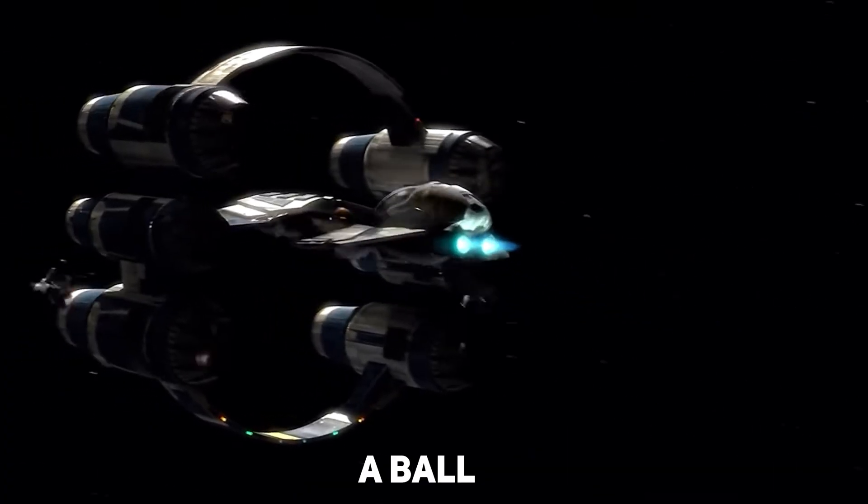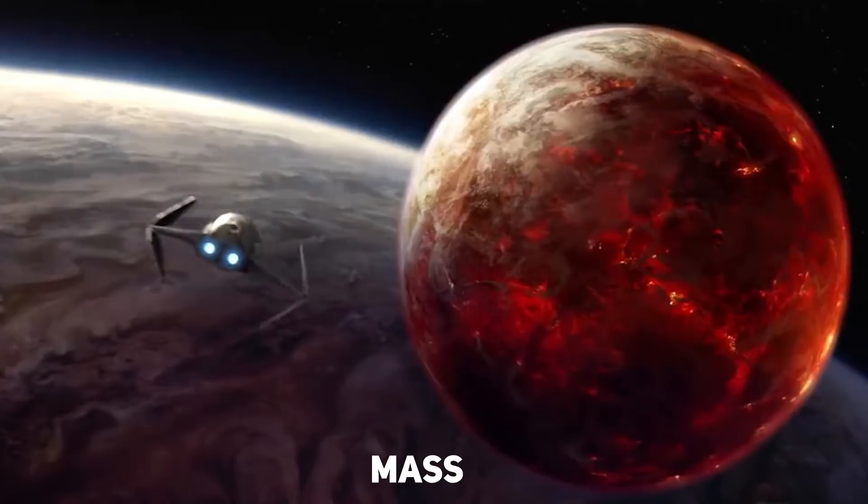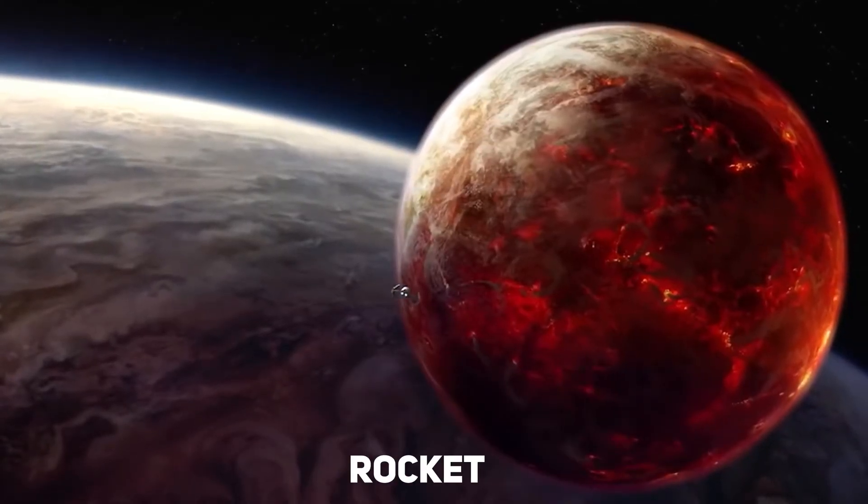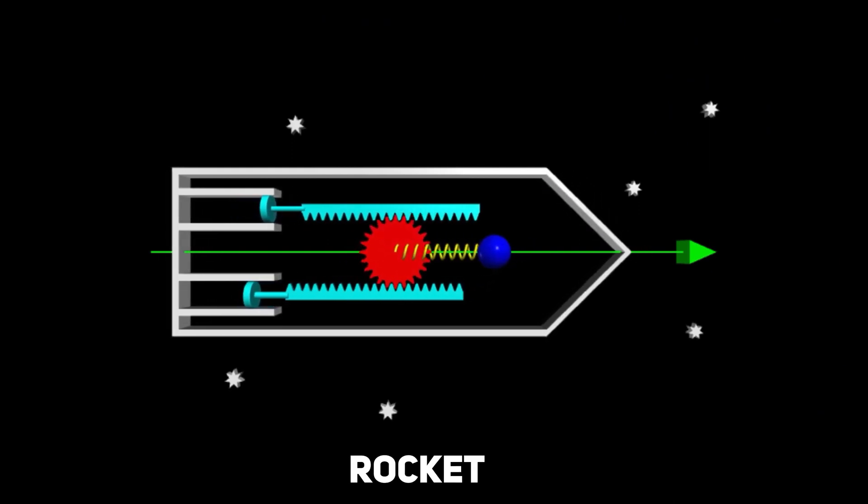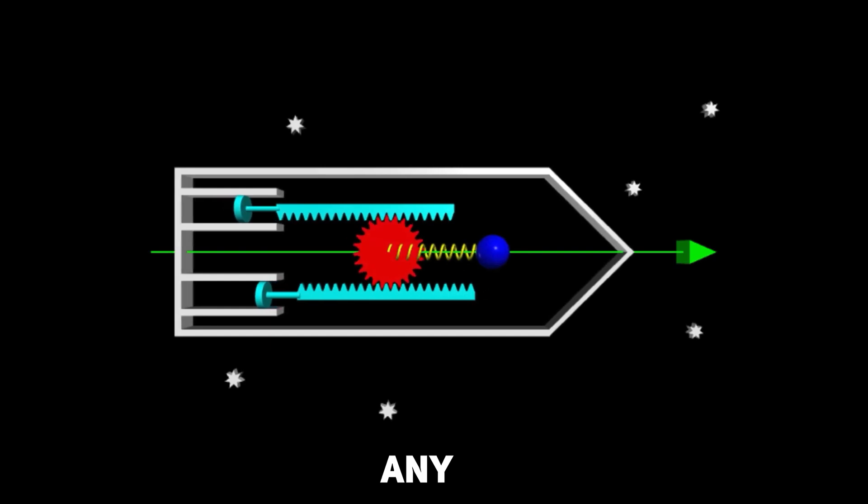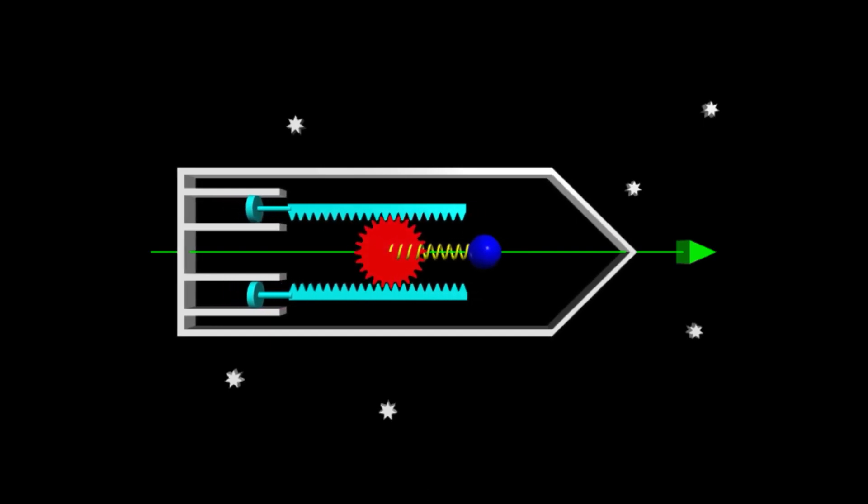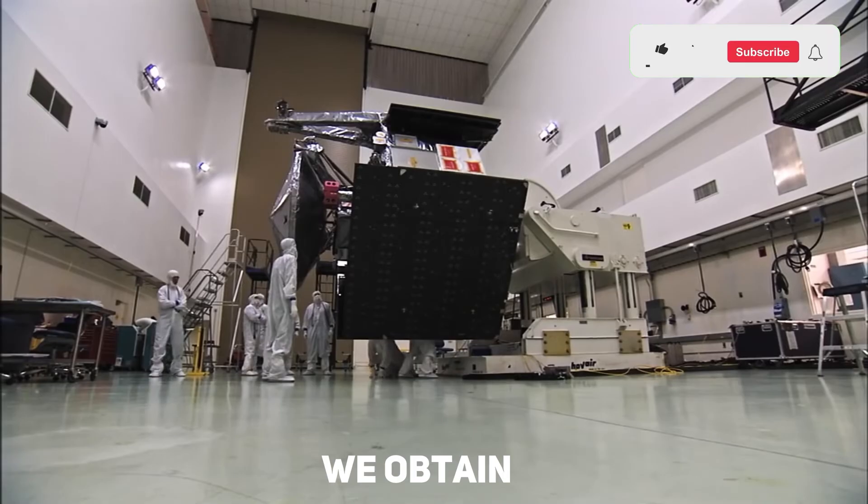Consider bouncing a ball inside a rocket. If you did that with a normal mass, when the ball hits the front of the rocket, the rocket would move forward a little. And when the ball hits the rear, the rocket would move back a bit. But that will not generate any thrust for the rocket. It will merely wobble. So how can we obtain enough thrust?